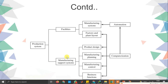Under manufacturing support systems, you have other things called utilities. Utilities are things like electricity and water supply. We have multiple manufacturing support systems and facilities. In manufacturing support systems, we have manufacturing systems — that is your machinery — and the space, factory plan, and layout, which together come as a facility.